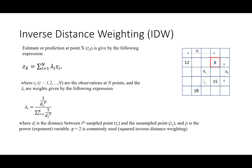The first method is inverse distance weighting. What you see on the right is a grid — used here just for demonstration purposes. We have three points where we have observed values: a point with observed value 12, a point with observed value 15, and a point with observed value 18. We want to estimate a value at location x.